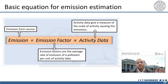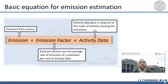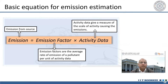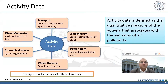The basic formula is: Emission = Emission Factor × Activity Data. Activity data can be how much fuel is being burnt in a power plant, or how many kilometers are driven by a vehicle — how much fuel is consumed. You multiply it by the emission factor, which is the average rate of emission of the pollutant per unit of activity — per unit fuel consumption or per unit kilometer driven.